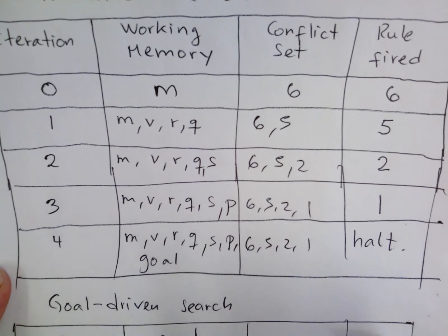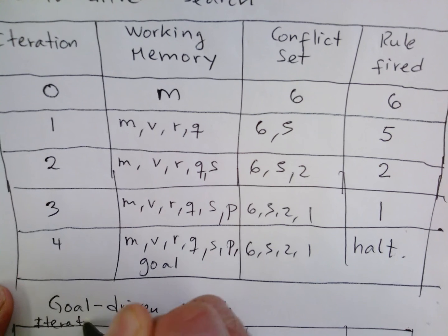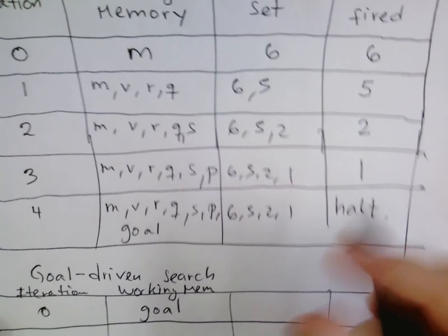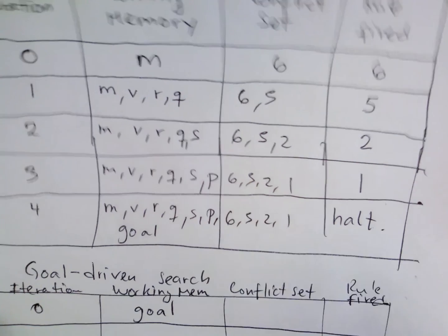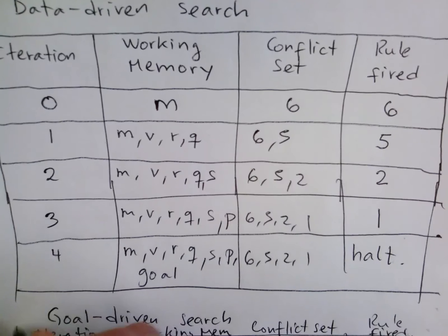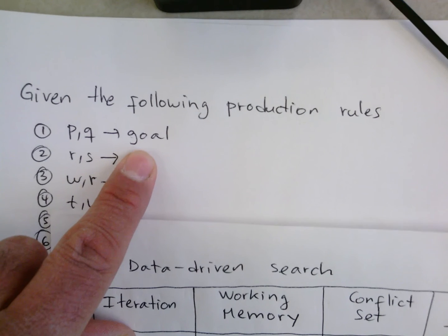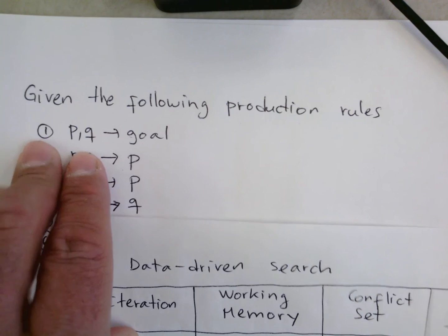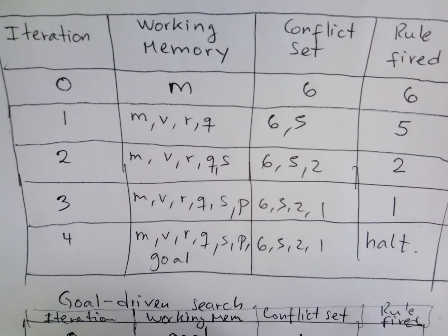In goal-driven search, the first iteration starts with the goal in working memory. The goal matches rule one — this is the rule that is executed first. So on the next iteration we have goal and P and Q added from rule one's right-hand side.